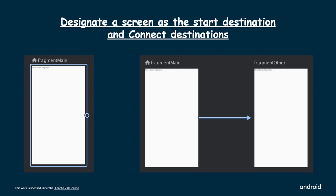An action is a logical connection between destinations. Actions are represented in the navigation graph as arrows. Actions usually connect one destination to another, though you can also create global actions that take you to a specific destination from anywhere in your app. With actions, you are representing the different paths that users can take through your app. You can use the navigation editor to connect two destinations by hovering over the right side of the destination you want users to navigate from — a circle appears. Click and drag your cursor over the destination you want users to navigate to and release. The resulting line between the two destinations represents an action.